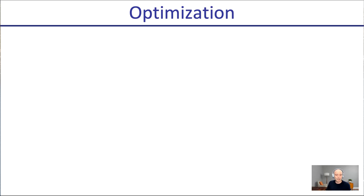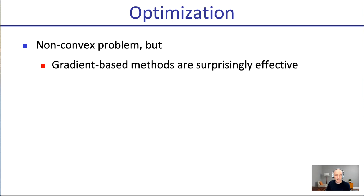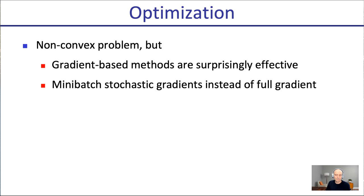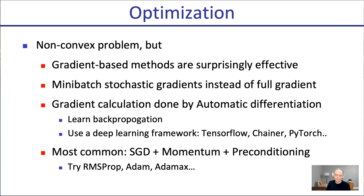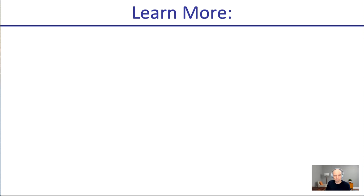How do you optimize neural networks to find the right parameter settings? It's a non-convex problem — for many years people were scared of this. But gradient-based methods are surprisingly effective, and mini-batch stochastic gradients are often used to speed things up. Auto-diff frameworks like PyTorch and TensorFlow provide gradients automatically. Most common methods are SGD with momentum plus preconditioning via RMSprop or Adam or AdaMax. You just choose the neural net structure, feed some data, and it finds the parameters that fit the data best.